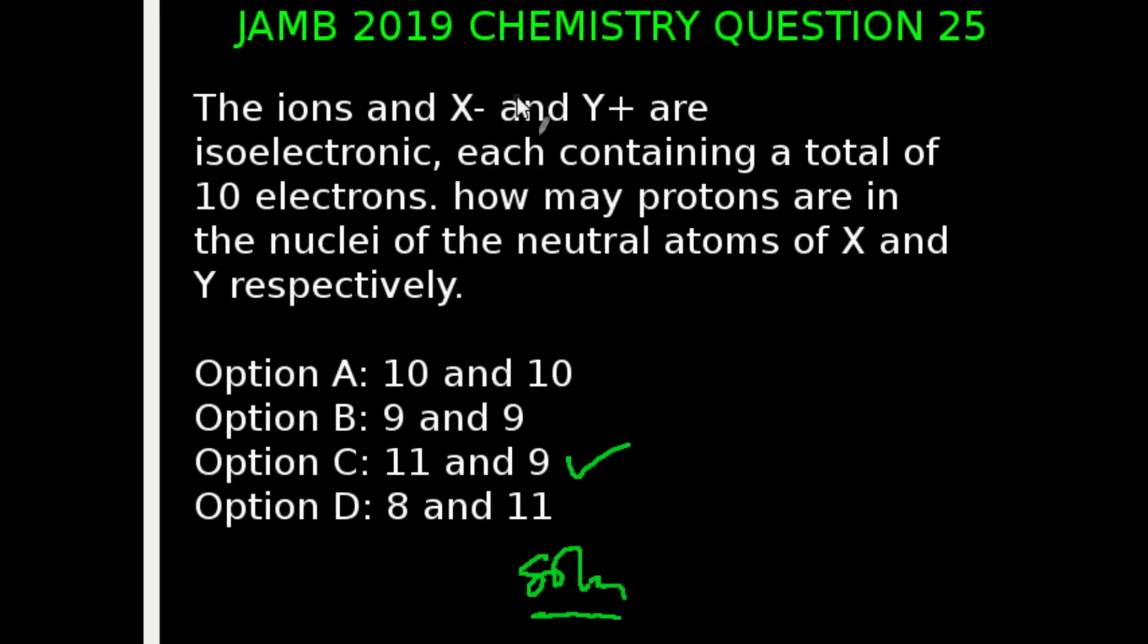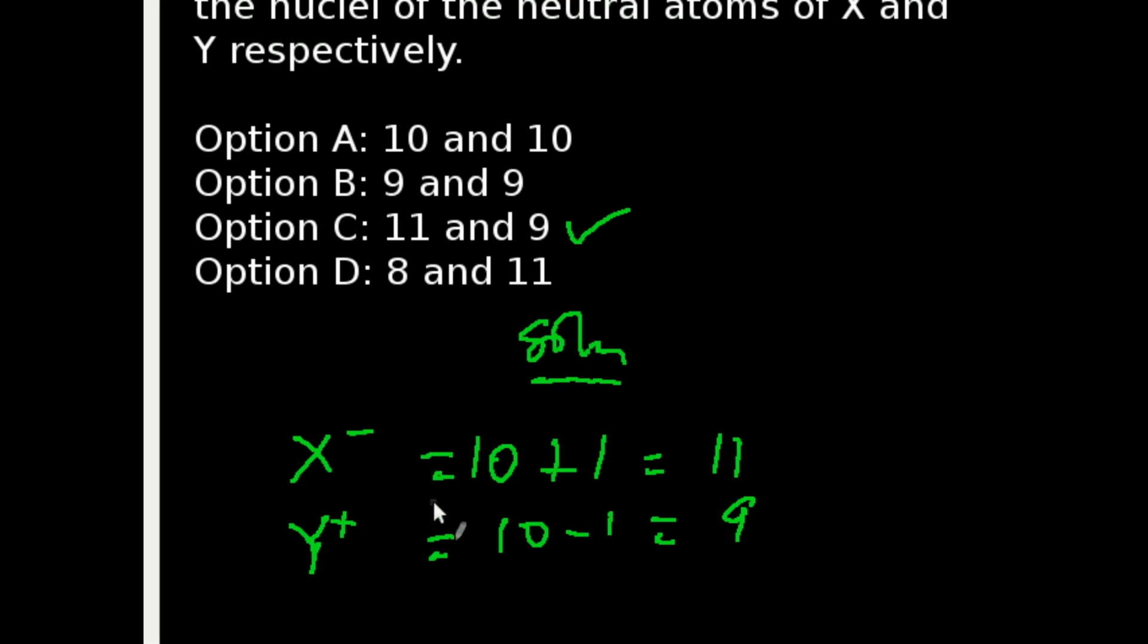Question 25 of JAMB 2019 Chemistry Examination. The ions X⁻ and Y⁺ are isoelectronic, each containing a total of 10 electrons. How many protons are in the nuclei of the neutral atoms of X and Y respectively? When we have X⁻, it means that the atom gained an electron.